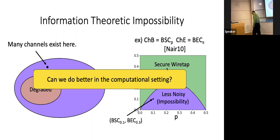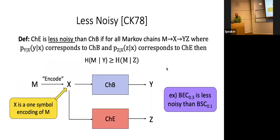Before we go to the computational aspect — can I ask about the less noisy condition you wrote on the other slide? Is it equivalent to saying that for any input distribution on X, the mutual information between X and Y is less than the mutual information between X and Z? Yes, those are just equivalent — I just happen to prefer writing it the other way for some proofs, but we can just as easily write it in terms of mutual information.